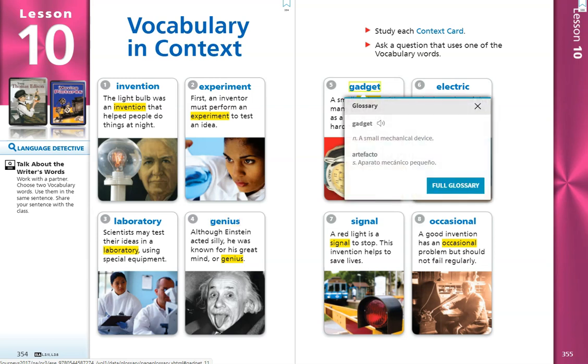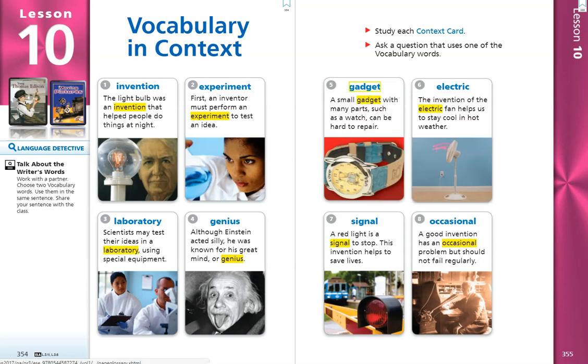We have another noun here and it is a small mechanical device. Number 6. Electric. The invention of the electric fan helps us to stay cool in hot weather.